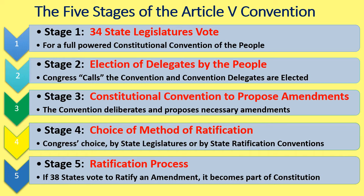Stage four is when any amendment proposals coming out of the convention are then sent to Congress. This is Congress's only power in the constitutional convention process: they choose whether the method of ratification will be by state legislatures or state ratification conventions.